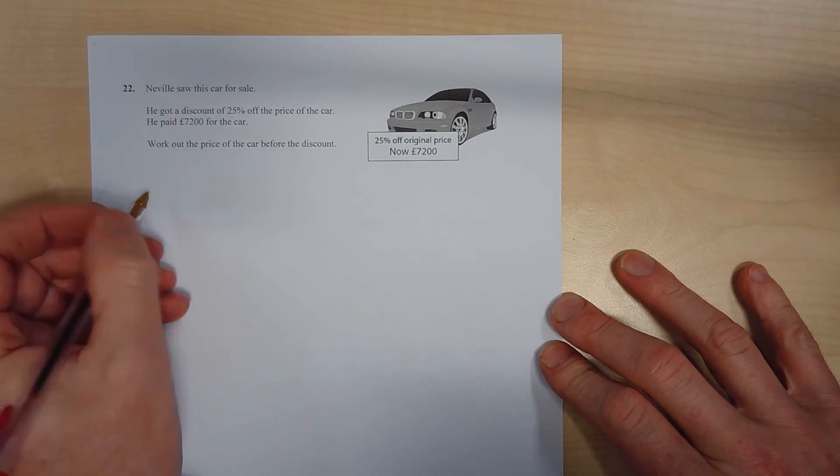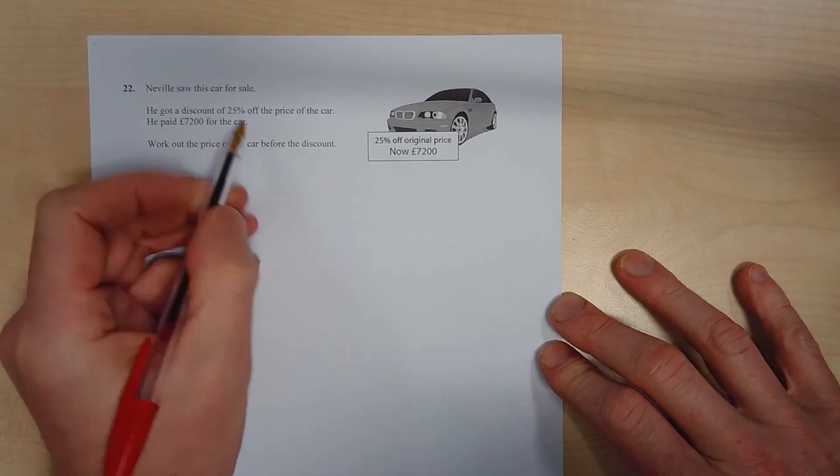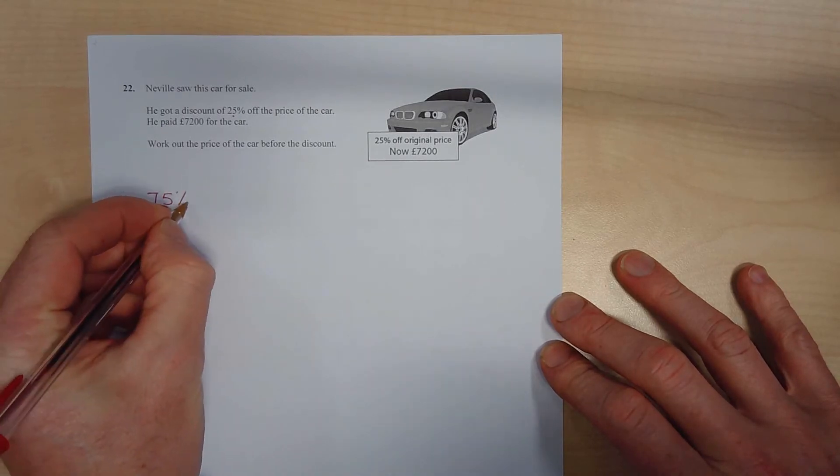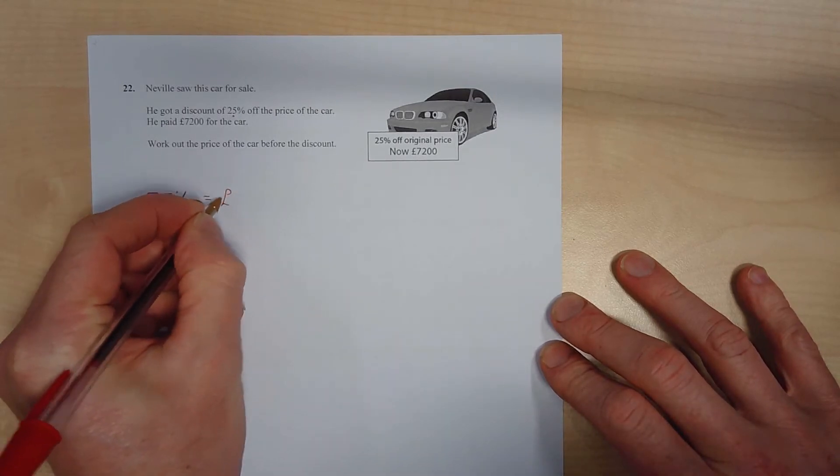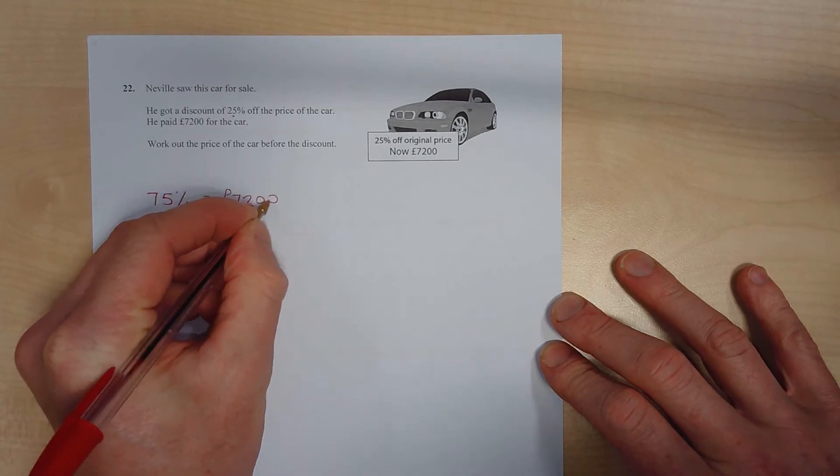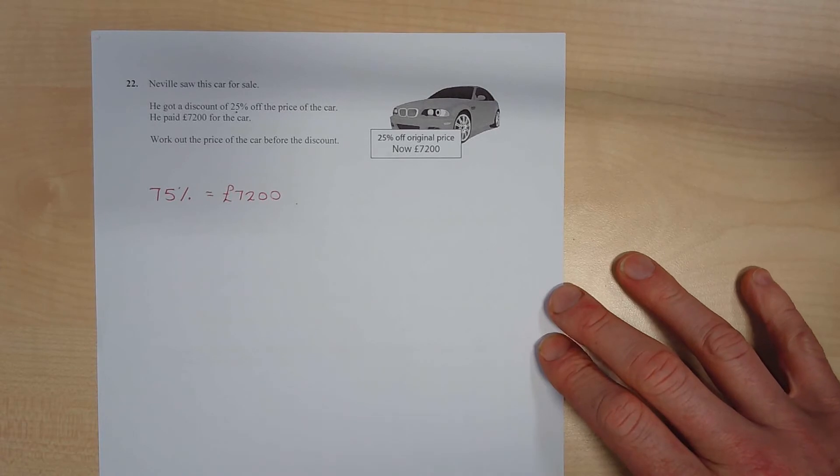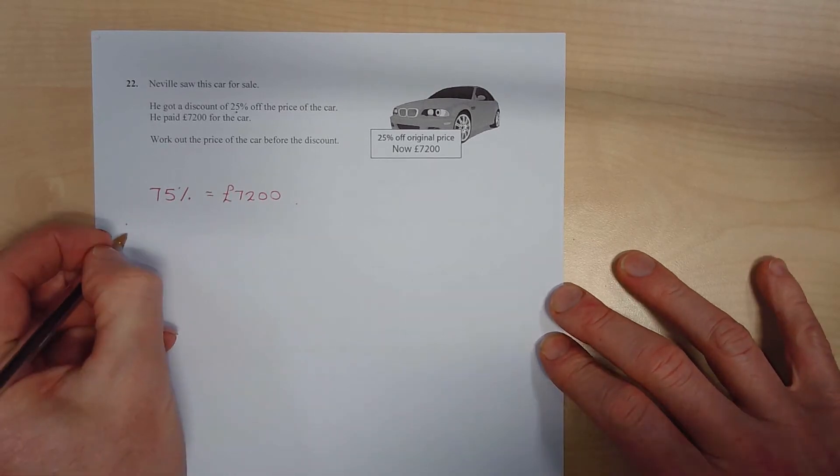So as we can see, the price of the car has been reduced by 25%, and it's now £7,200. Now what you mustn't do, you mustn't work out 25% and add it on, and that's not the correct way. So a couple of ways to do this.